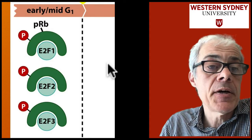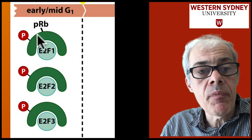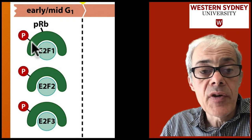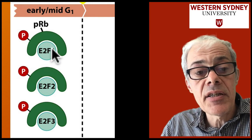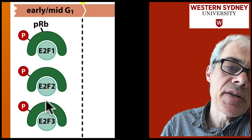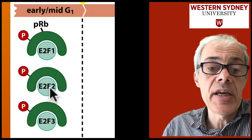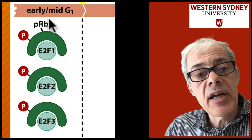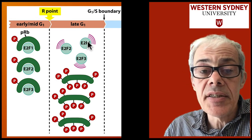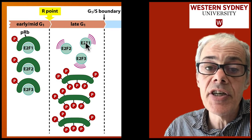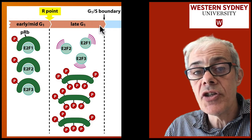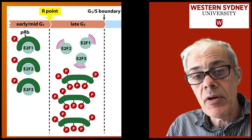Here's that green blob — retinoblastoma — which in early G1 is lightly phosphorylated or not phosphorylated. In this state, it binds to transcription factors called E2F — there's a family: E2F1, 2, 3. Retinoblastoma sequesters and inactivates E2F. Once cyclin-dependent kinases phosphorylate retinoblastoma, it dissociates from E2F, releasing these transcription factors. They then turn on genes important for DNA replication, and once those genes are activated, cells go into S phase.